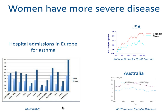The severity can be shown here with hospital admissions for asthma, which usually points to more severe disease. For all of these European countries, more women are admitted to the hospital than men for asthma. And also women tend to die more often of asthma — these are data from the USA and Australia, and in both countries more women die of asthma than men.